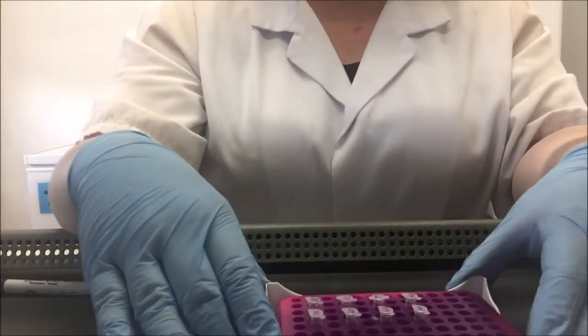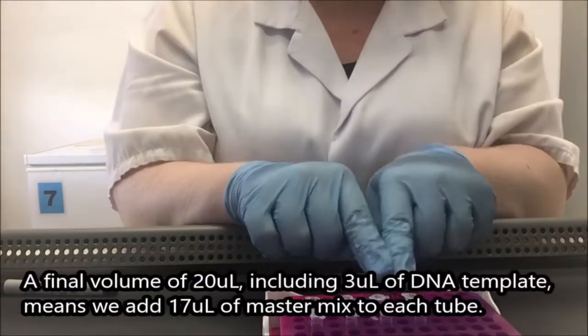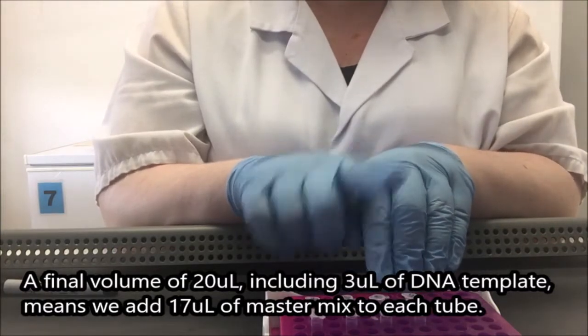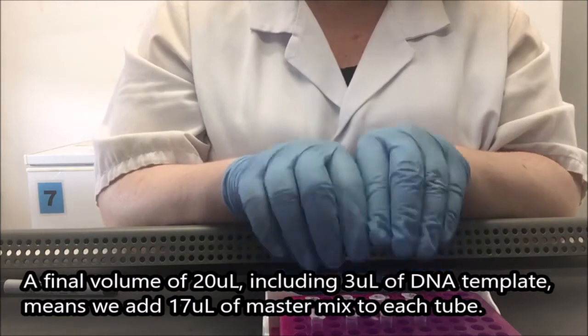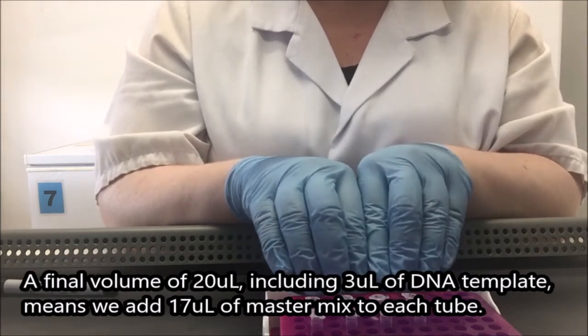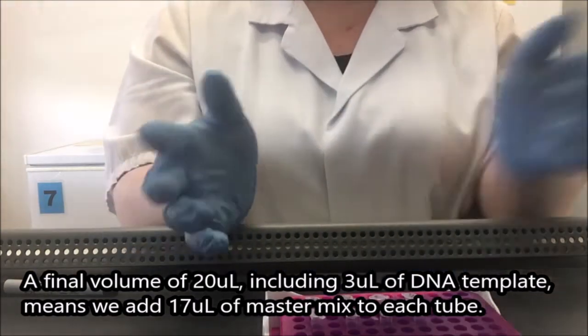And now we're back to our pre-prepared smaller tubes. And to each one of these, I want the final volume at the end to be 20 microliters. But in addition to the master mix we've prepared, I'm going to be adding 3 microliters of DNA. So I need to deduct that 3 microliters of DNA from my 20 microliters of desired volume. That gives me 17.